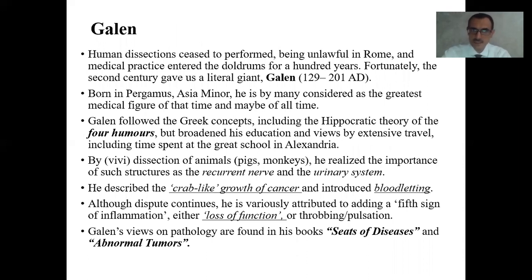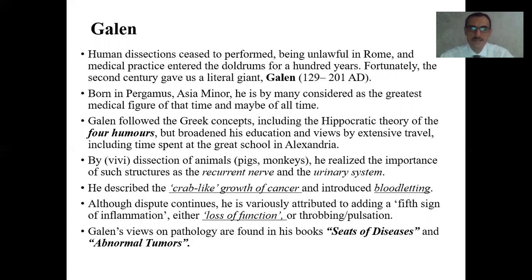'Notae vero inflammationis sunt quatuor: rubor cum calore et dolore' — still learned by every medical student and to be discussed in the study of inflammation. Human dissections had been unlawful in Rome, and medical practice entered the doldrums for a hundred years. Fortunately, the second century gave us the literal giant Galen. Born in Pergamon, Asia Minor, he is by many considered the greatest medical figure of that time, and maybe of all time. By dissection of animals such as pigs and monkeys, he realized the importance of structures such as the recurrent nerve and the urinary system. He described the crab-like growth of cancer and introduced bloodletting.